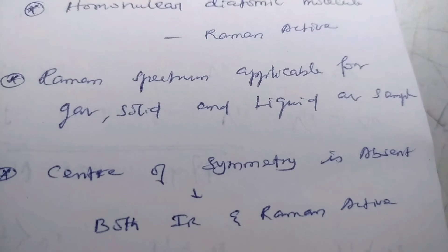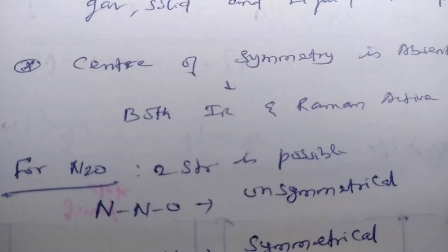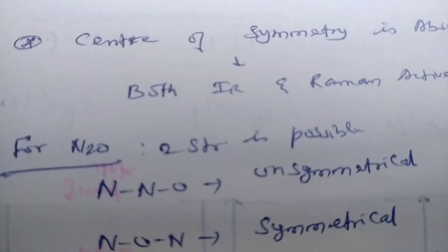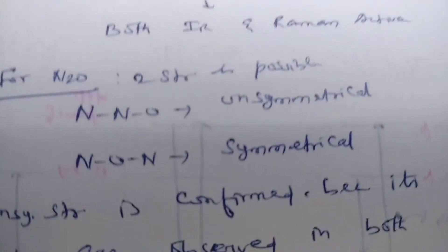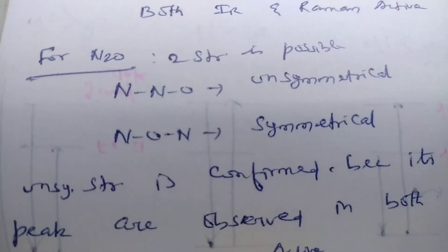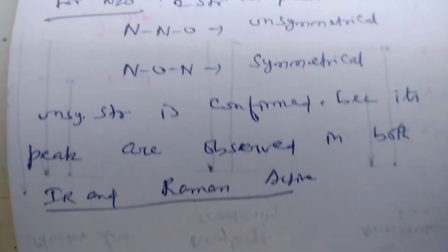Center of symmetry is absent, both IR and Raman active. For nitrous oxide, two structures are possible: unsymmetrical and symmetrical. Unsymmetrical structure is confirmed because it absorbs in both IR and Raman active.